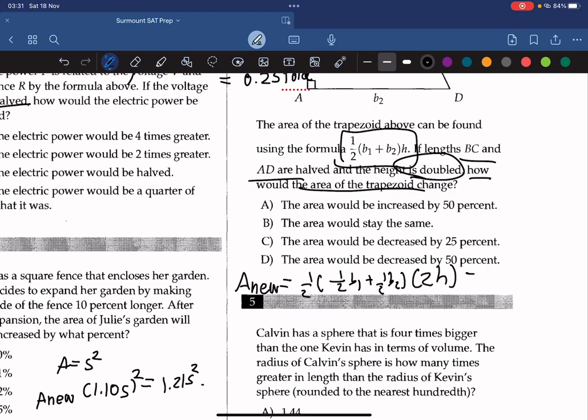And we can rewrite this as 1 over 2. We can factor out 1 over 2, so 1 over 2 times B1 plus B2 brackets, and multiply by H, which will be equal to 1 over 2. So we can see that the area stays the same because the result is the same as the old formula. So it must be B.